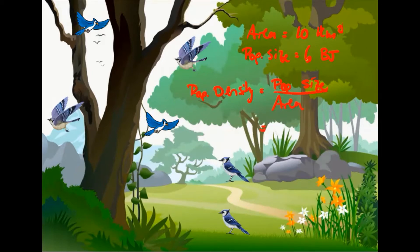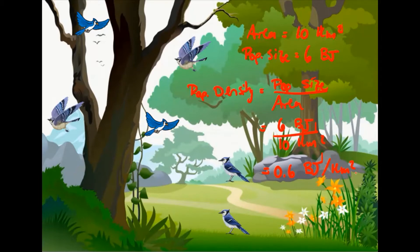In this case, we take our six blue jays and divide by our 10 kilometers squared. Six divided by 10 gives us 0.6. We have to keep the units, so rewriting them as a fraction, your population density is 0.6 blue jays per kilometer squared.